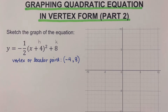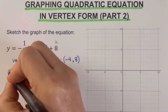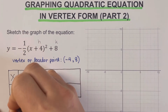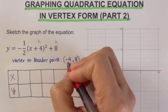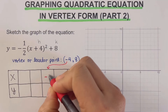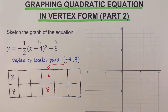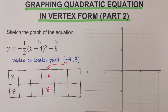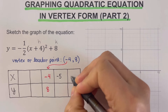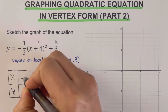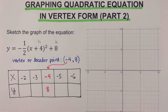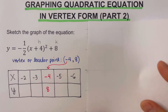The second step is to create and complete the table of values. We place the locator point in the middle of the table, so (−4, 8) goes in the center. From there, we go left to −5 and −6, and right to −3 and −2. Then we determine the y-values for each of these x-values using a separate piece of paper to show the work.